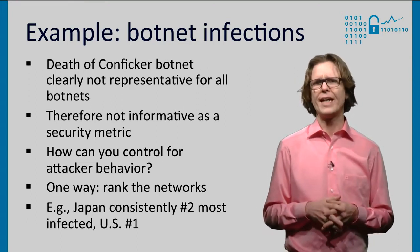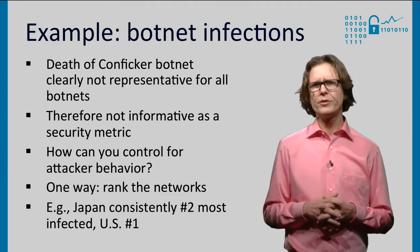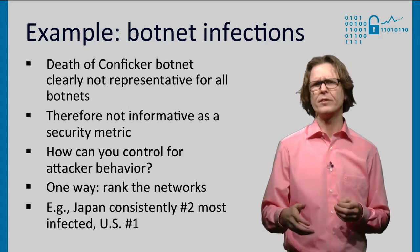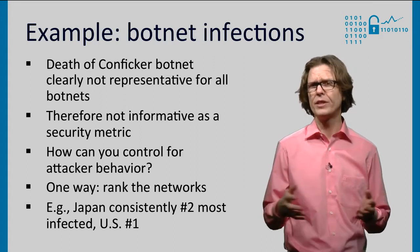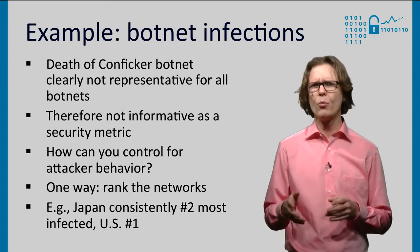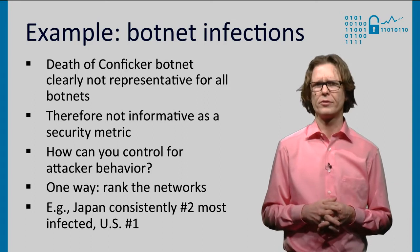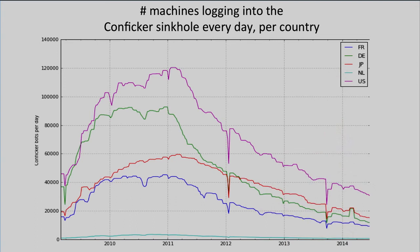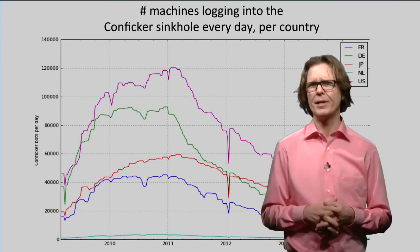So how could you control for attacker behavior? One way to do this is to rank the networks. Rather than looking at the absolute number of incidents as the metric, because that is mostly driven by the attacker, you turn the metric into a rank order that expresses how well or poorly each network does. In a rank metric, Japan — the second line from the top — would consistently be the number two most infected over the whole period, while the US — the top line — would be number one. And the fluctuations of the exact number of incidents have then been taken out of the metric.